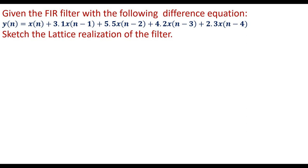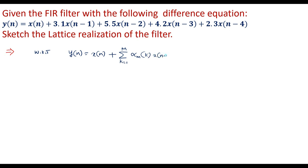In this video, I will explain the realization of lattice structure for the given difference equation. We know that the general form of the difference equation is represented as y(n) = x(n) plus summation k=1 to m of alpha_m(k) * x(n-k). Let me expand this equation. We can see that the highest order of the difference equation is 4.